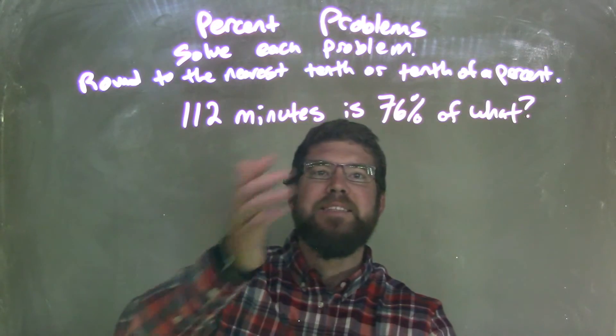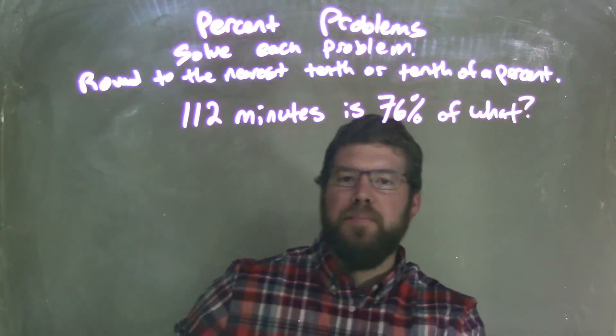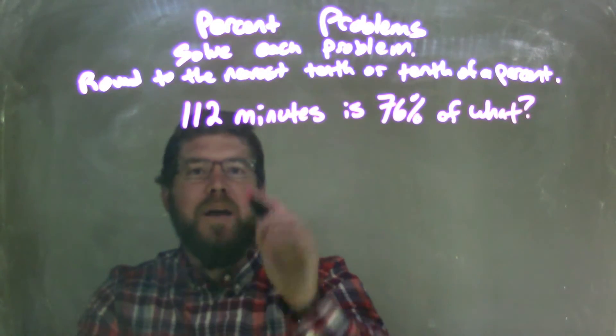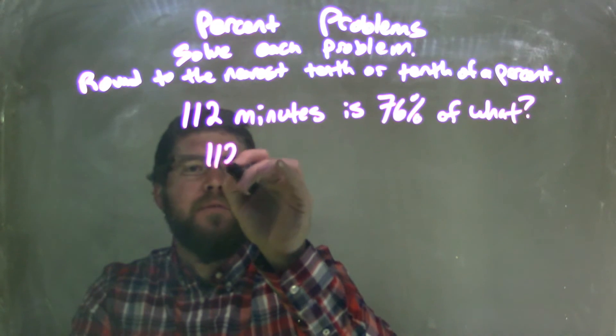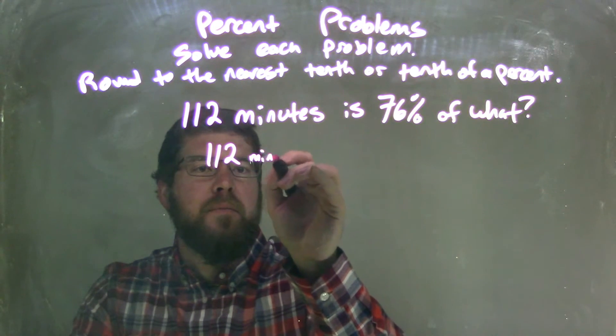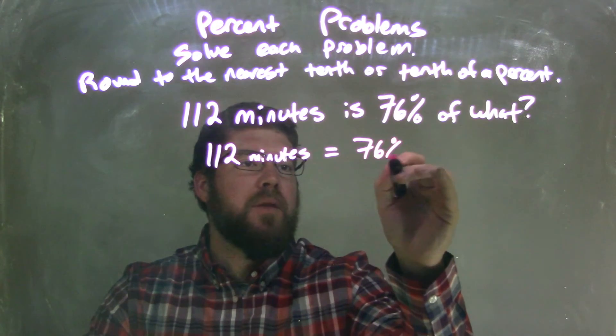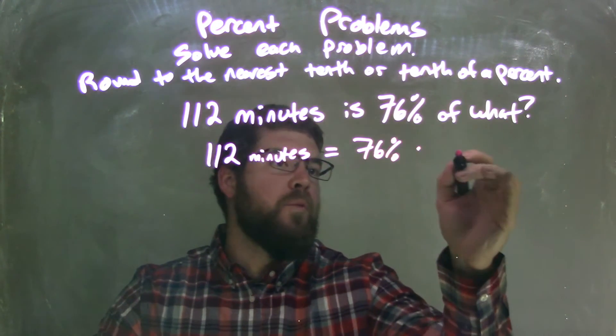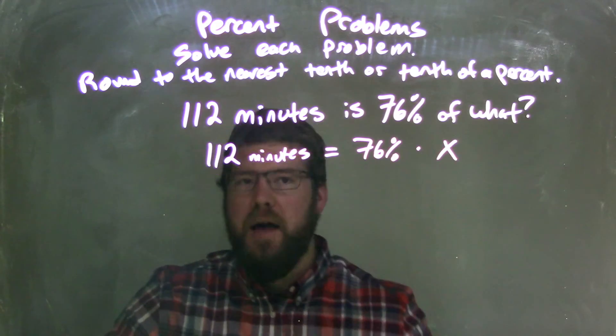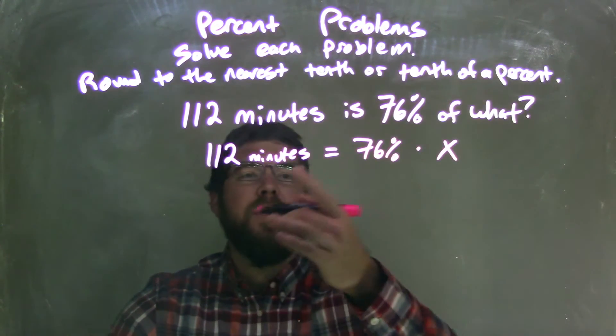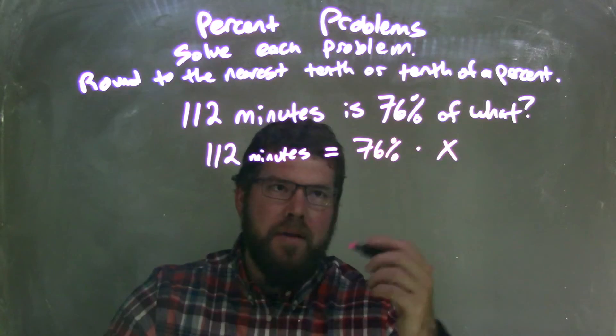So 112 minutes is 76% of what? Let's make this into an equation. 112 minutes equals 76% of what? Variable x. So 112 minutes is 76% of what? Make that x.